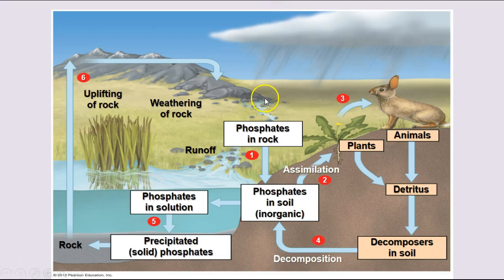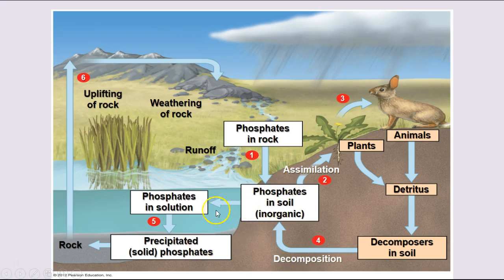Here we have the phosphorus cycle, showing phosphorus in the phosphates in the rock, which can be assimilated by plants into their tissues, then eaten by animals. They all produce detritus, which is decomposed in the soil. The phosphates in the soil get into solution in the water and can be precipitated out into solids, which over time can become rock. Weathering of the rock produces the phosphates in the first place to be assimilated by plants — a nice cycle that depends on an abiotic reservoir in the rock.